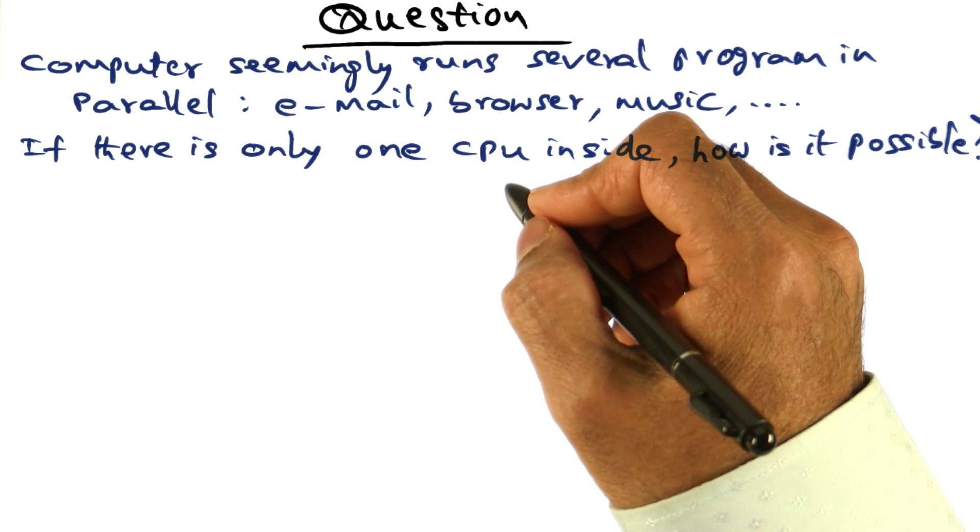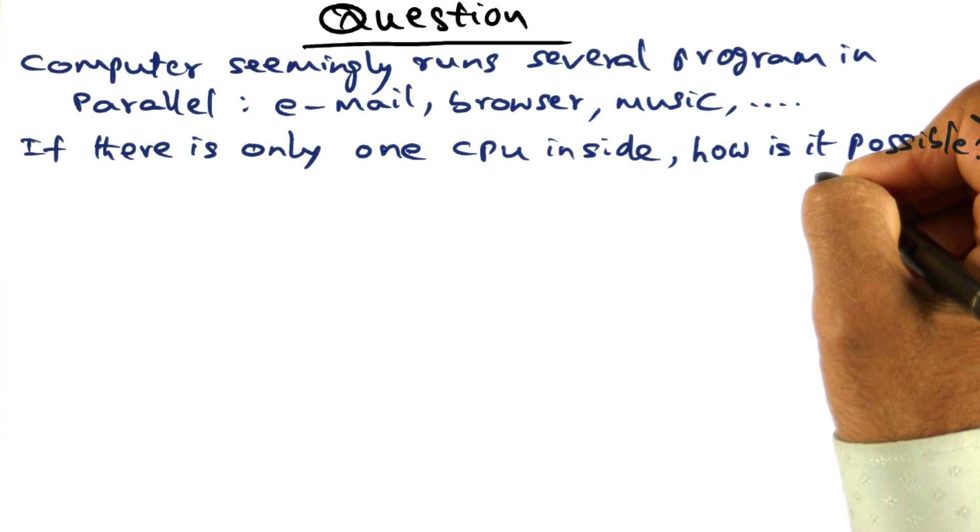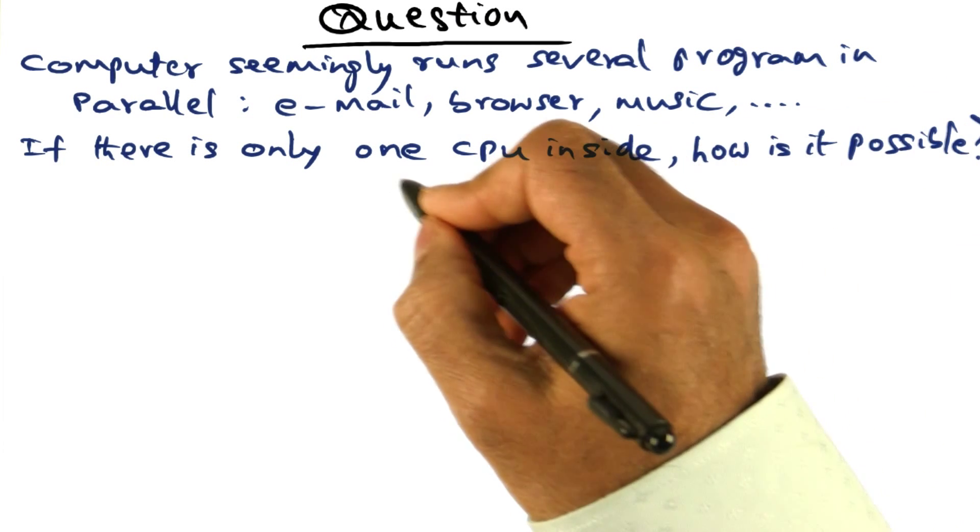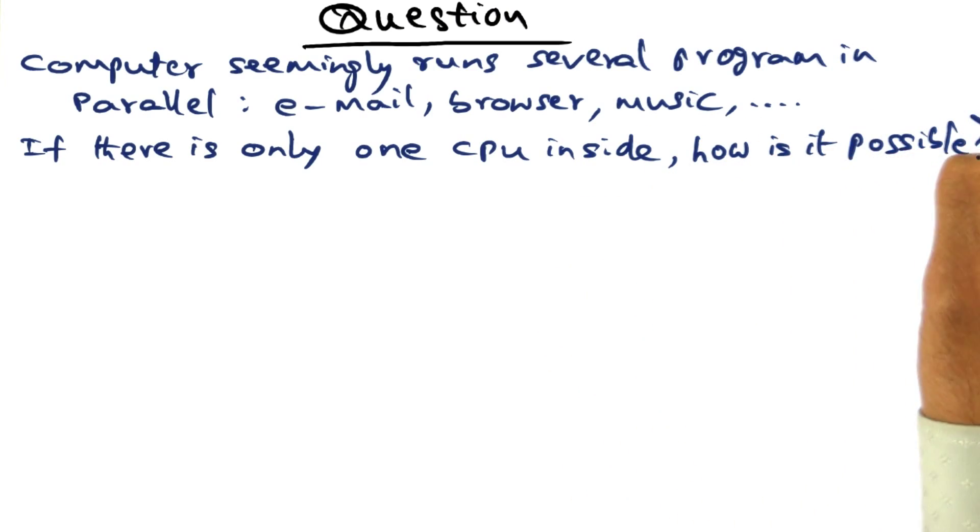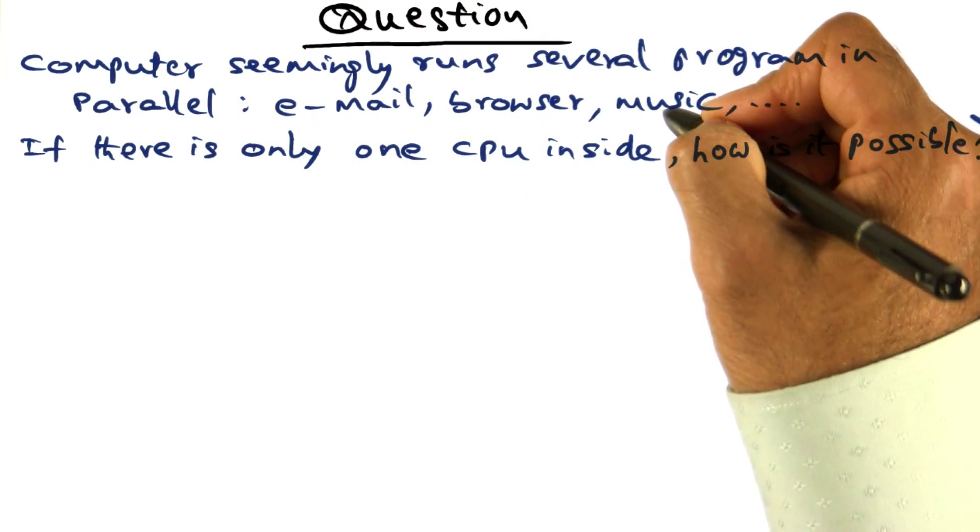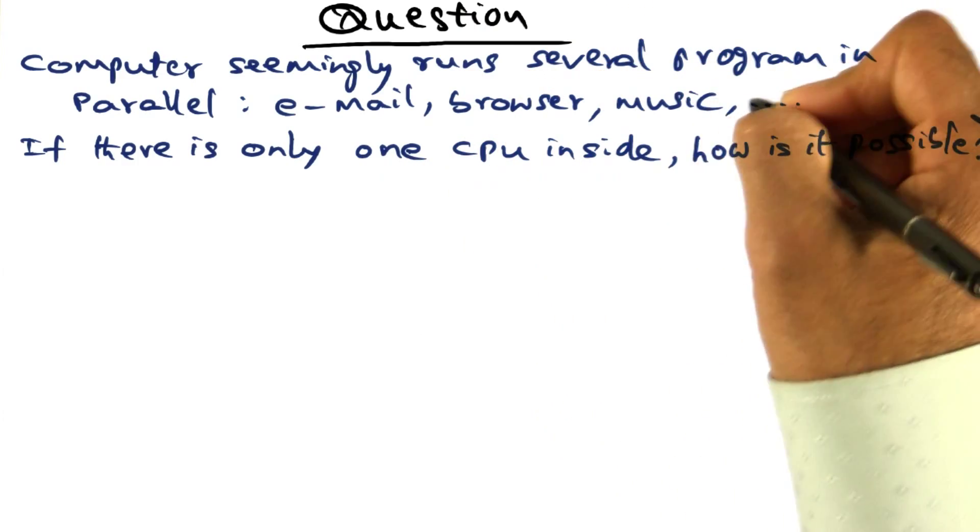But suppose there is only one CPU inside. Let's assume that your computer system has exactly one CPU inside. How is it possible that it is running several programs in parallel?